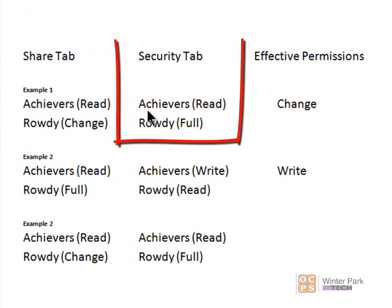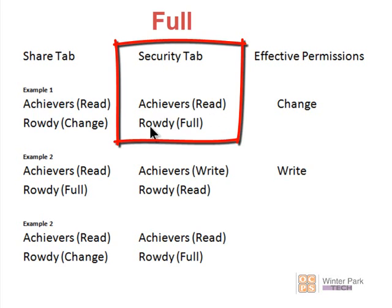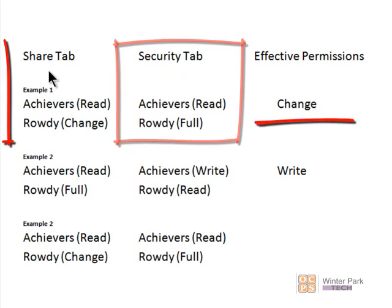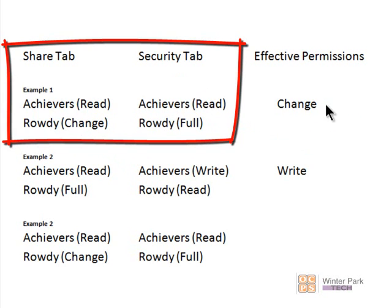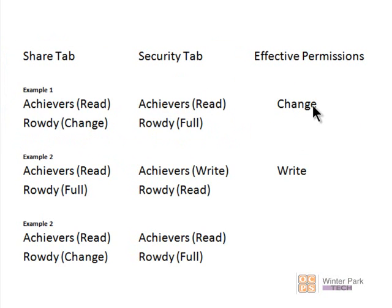Now we go to the Security tab and do the same thing — take the best or least restrictive permissions. Achievers have Read, Rowdy has Full — the best permission is Full. So under NTFS, White Hat has Full permissions. Then we take the most restrictive between the two tabs, just as we did for individual user accounts. The most restrictive between Change and Full is Change. So Change is the effective permission for White Hat when his account is part of two groups.